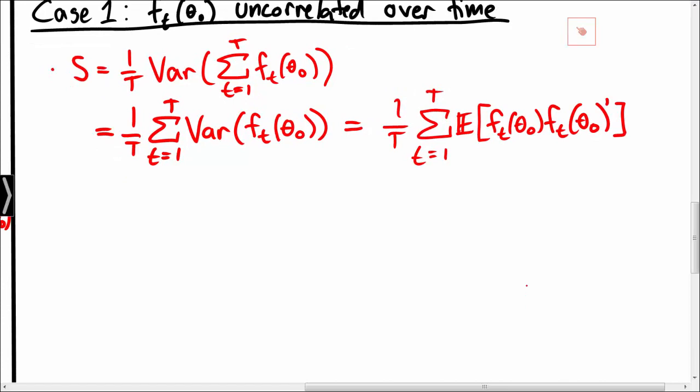So in order to estimate S consistently we may simply compute the average of Ft Ft prime. We refer to this as the heteroscedasticity consistent estimator for the covariance matrix.